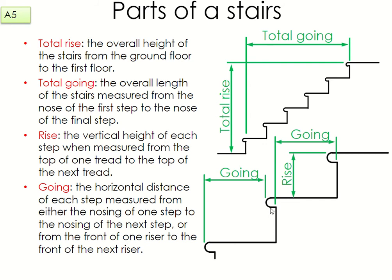The steps will always overhang over the riser. You can measure the going starting at the nosing of one step not including its overlap, or starting at the front of the riser including the next step's overlap — both methods give you the exact same measurement. It's just two different ways of measuring the going.